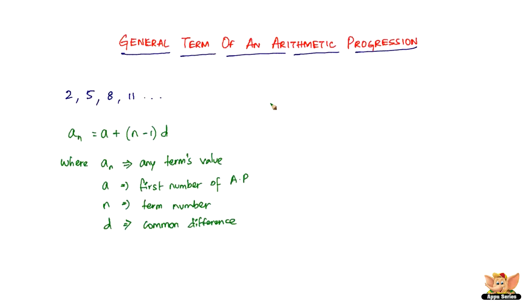So this is the general term of an arithmetic progression. Let me quickly give you an example, or first of all, let me write this in terms of words. Let me write it here. General term: the first term of an AP equals the first term plus the term number.